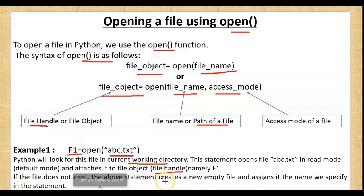If the file does not exist, the above statement creates a new empty file and assigns it the name we specify. So if abc.txt doesn't exist, Python will create a new empty file named abc and connect it to the file handle f1.